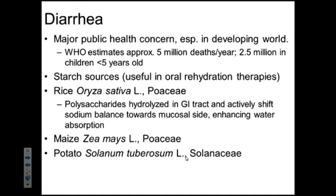Who cares about diarrhea? You should all care about it because it globally kills about five million people a year from different types of parasites and other pathogens. There are 2.5 million children each year under the age of five who are impacted — their water balance can be completely thrown off, leading to death in young children. So some of the primary forms of treatment are oral rehydration therapies from different sources of starches.